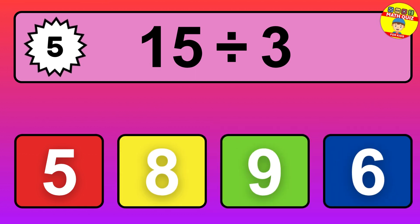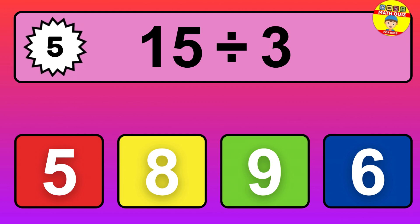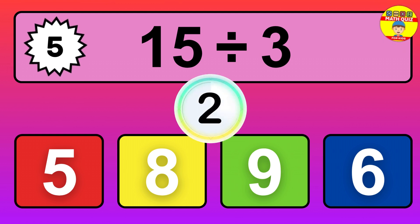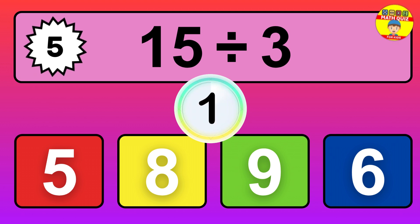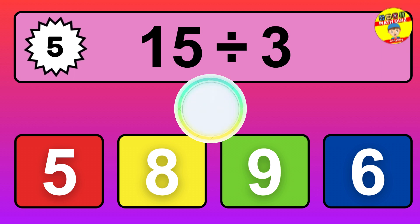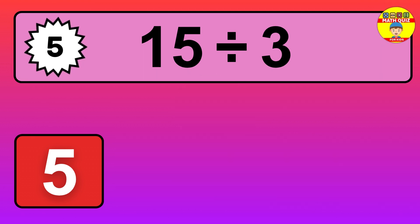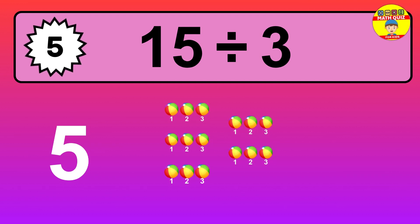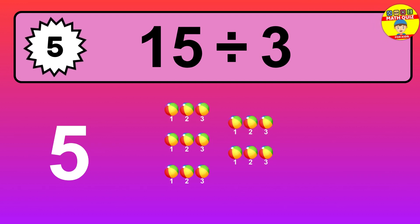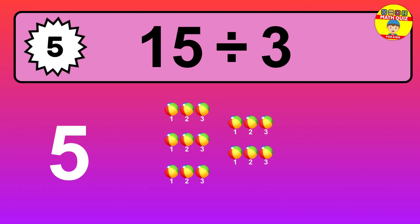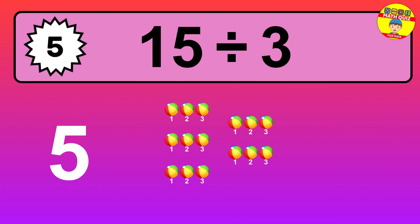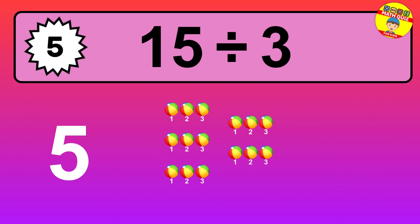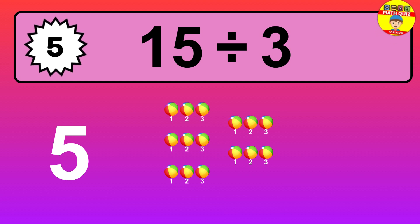15 divided by 3 is... time to think. Let's go to the solution. Divide the number 15 by 3. Each group contains 3 units, so dividing 15 by 3 results in 5 equal groups.